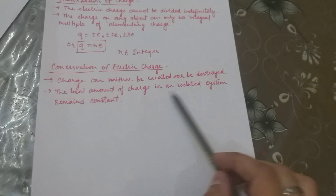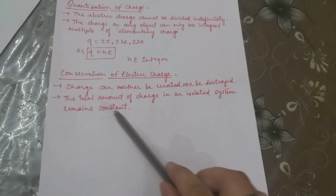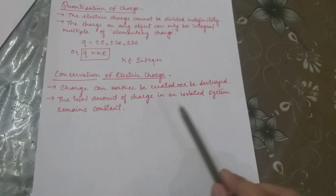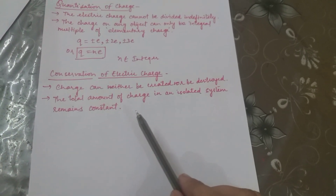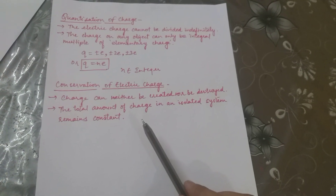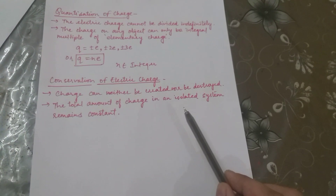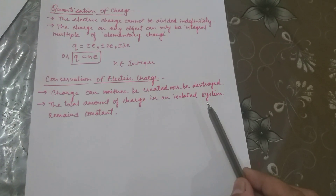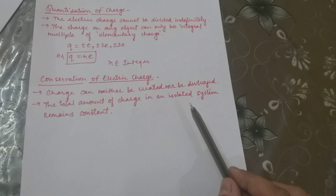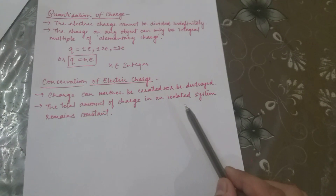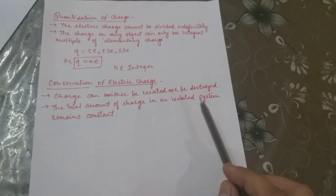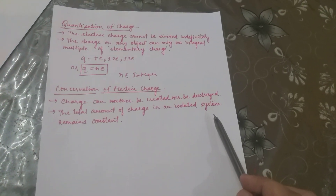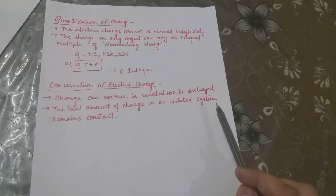The next topic is conservation of electric charge. Charge can neither be created nor destroyed. The total amount of charge in an isolated system remains constant. Charge can only be transferred from one object to another, but it cannot be created or destroyed. So this is all the basic knowledge about charge — let's wind up here.